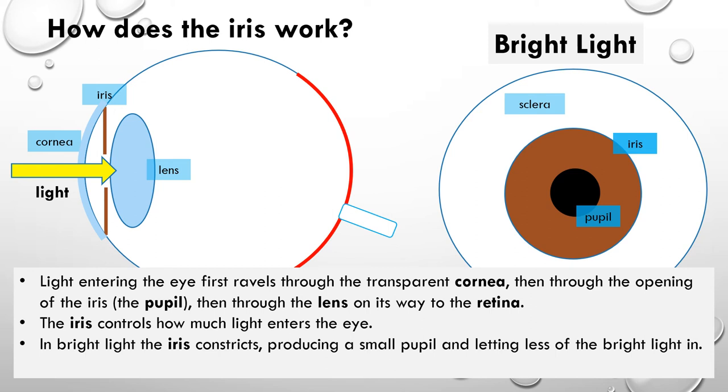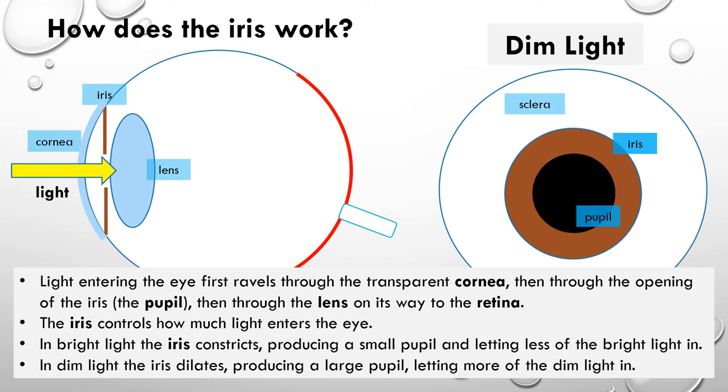If we have dim light, then the pupil opens up further to allow more light to get to the back of the eye and into the retina. So in bright light, we have a constricted pupil, and in dim light, we have a dilated pupil. Dilated means it's open wide.